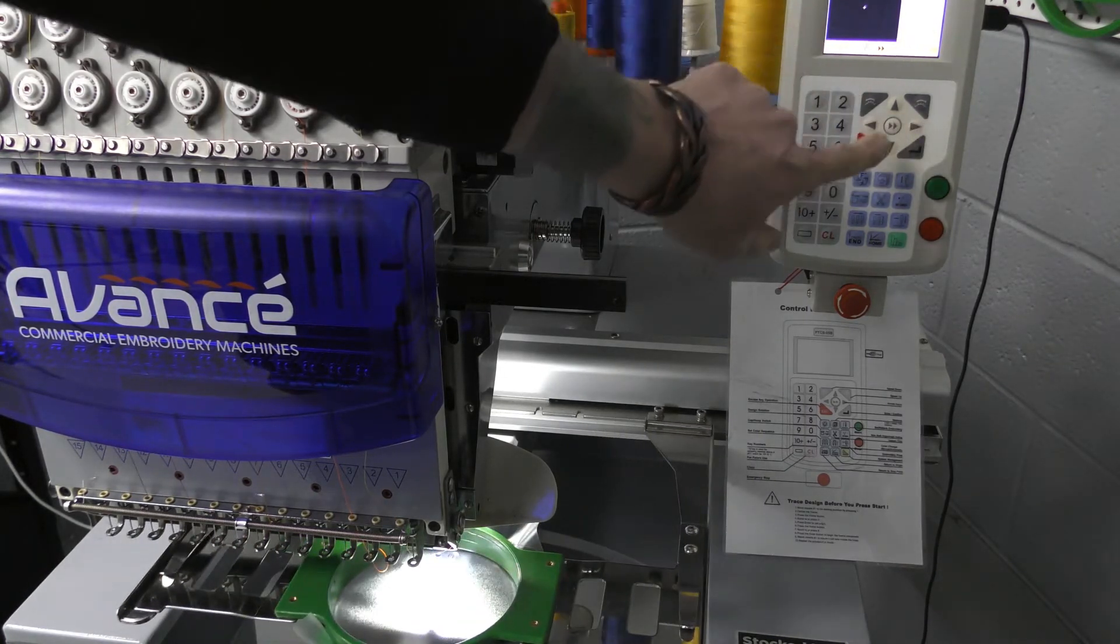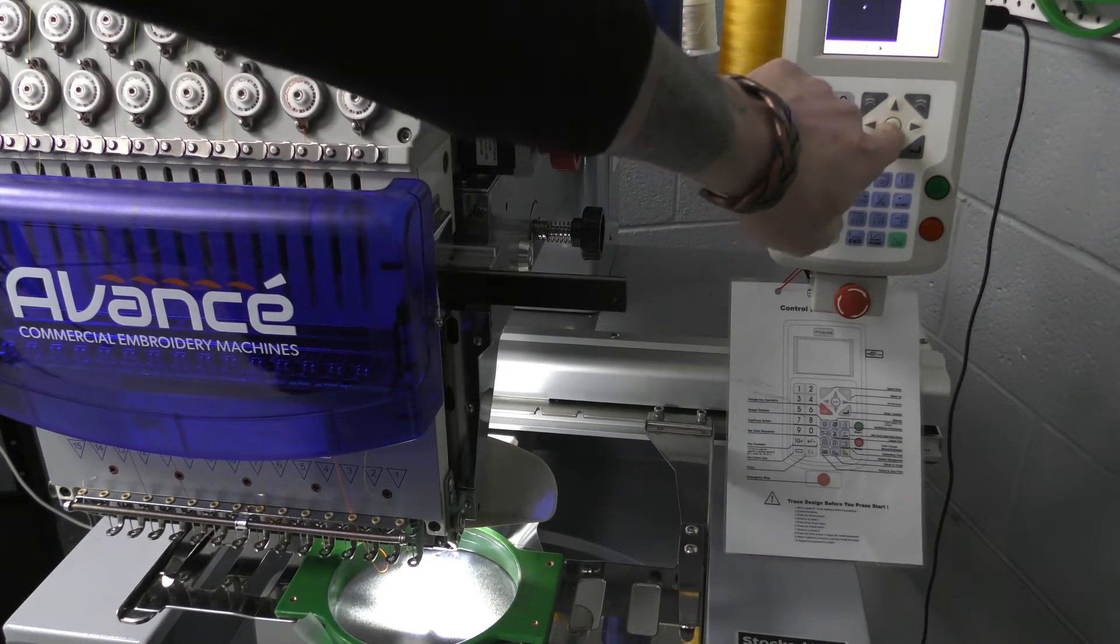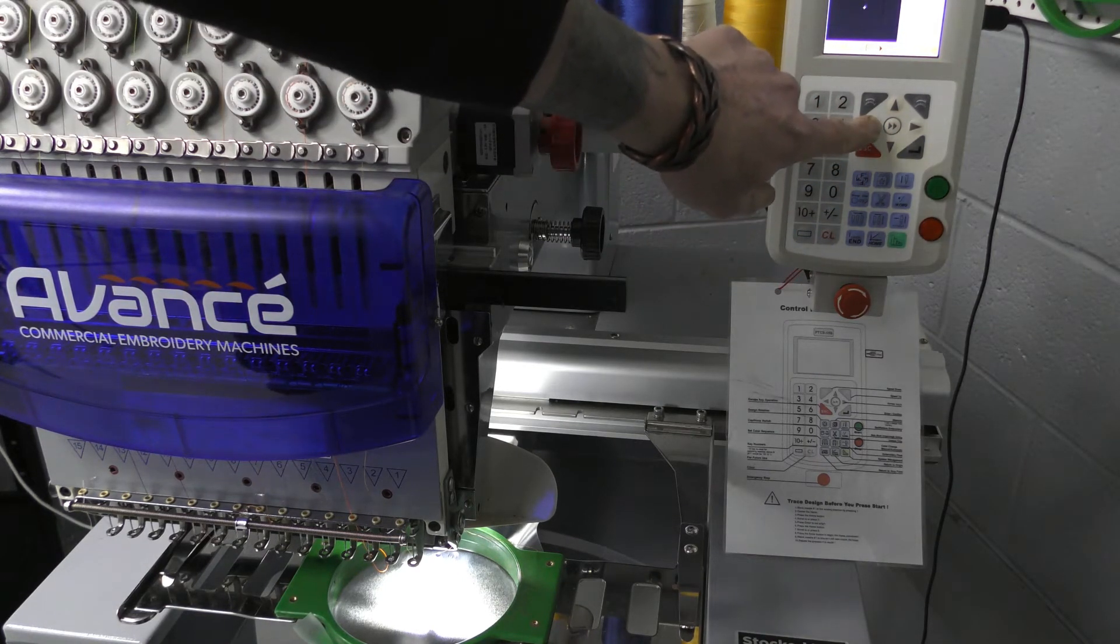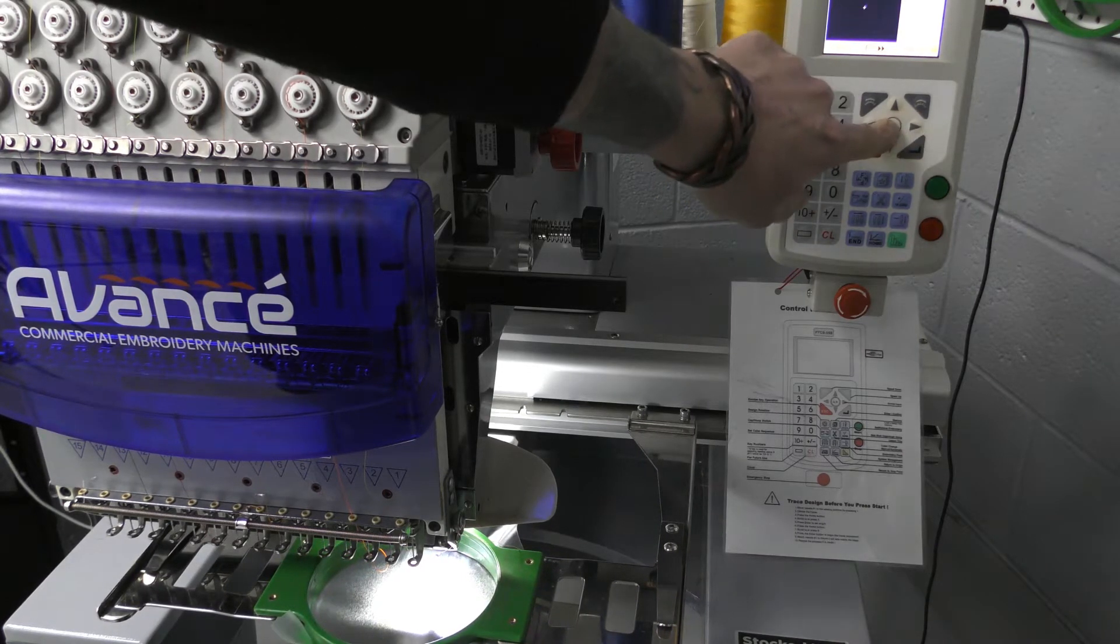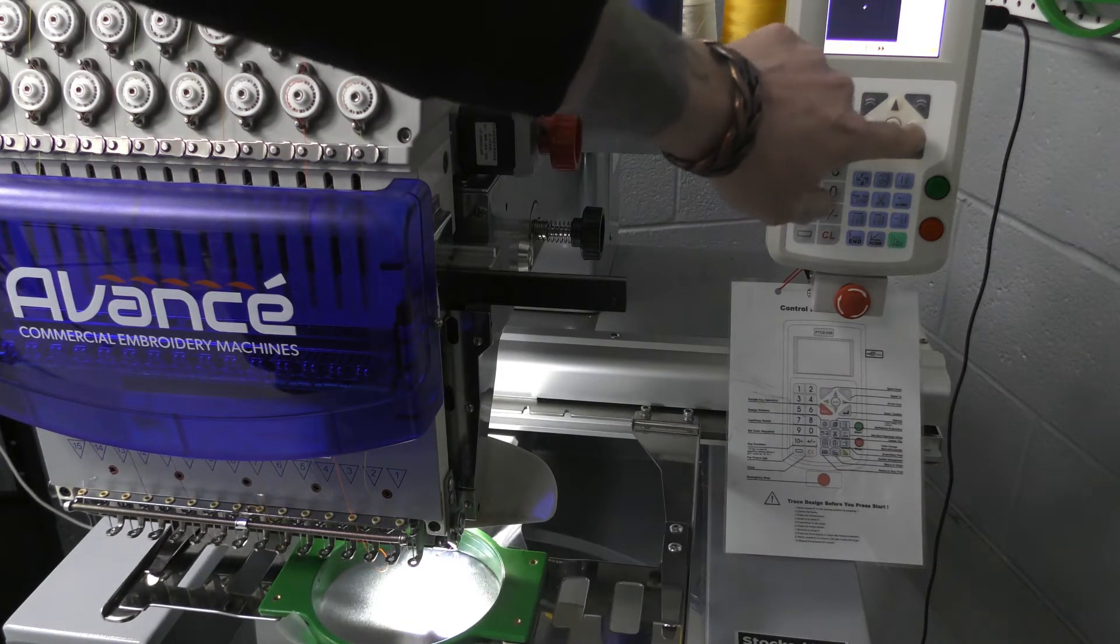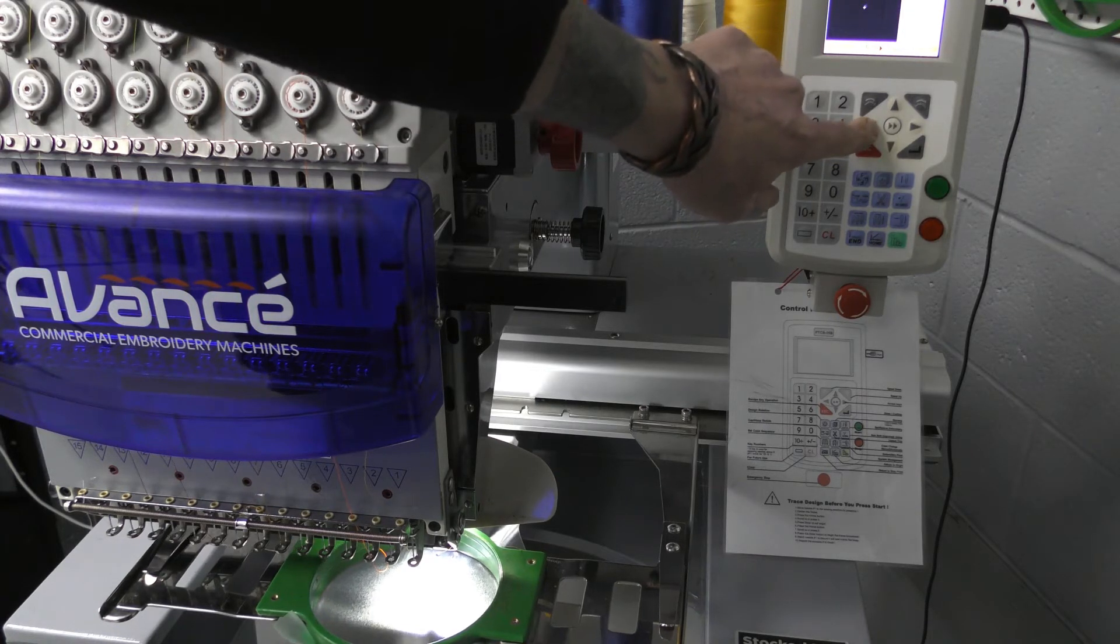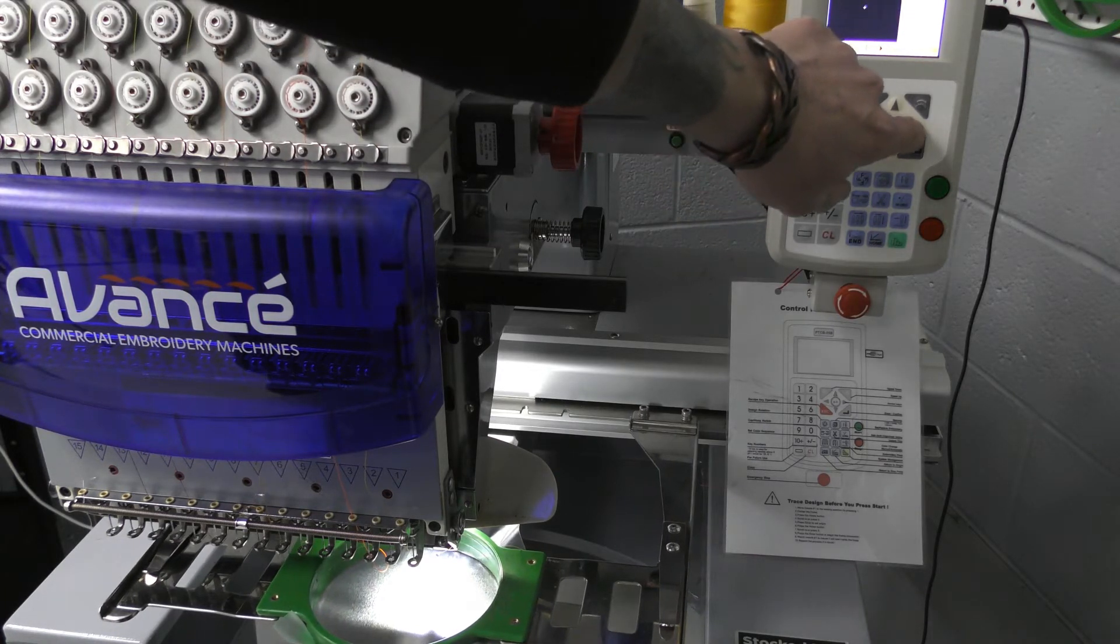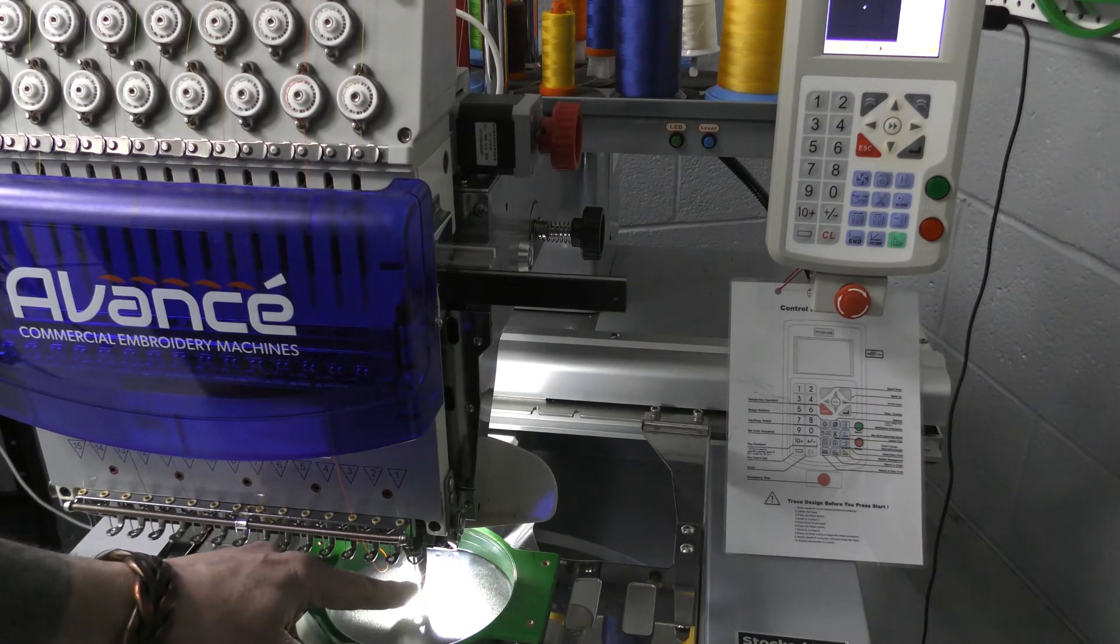In order to slow it down, I click the center button, and now it moves really slow. Okay, so get it to the general area that you need it to be, and then click that button and micro scoche it to the center. So now the needle is in the center.